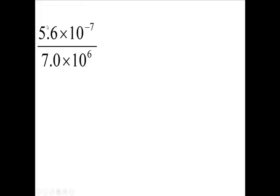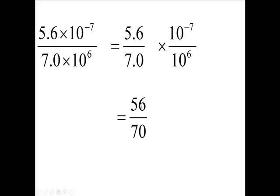Write this problem down by itself, 5.6 over 7.0. And then we'll have this part of the problem. Let's make this into 56 and 70. Move the decimal over one place on both of those.